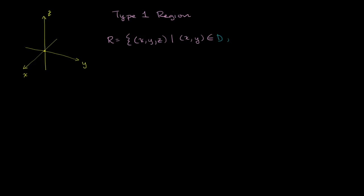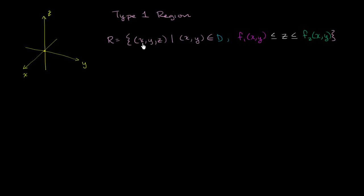And z essentially varies between two functions of x and y. So f1(x, y) is the lower bound on z — f1(x, y) ≤ z ≤ f2(x, y) — where f2(x, y) is the upper bound. This defines our set of x, y, and z's.